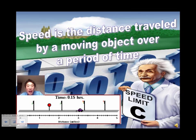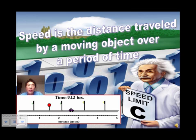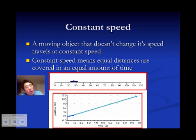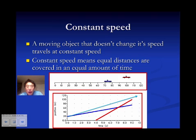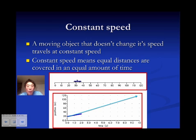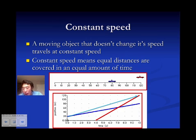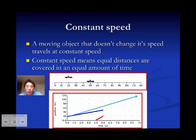Speed is the distance traveled by a moving object over a period of time — that is the very basic definition of speed, and that is our equation. The graph below shows the general direction of two cars: one moving at a slower constant speed, and the other moving at a faster constant speed.